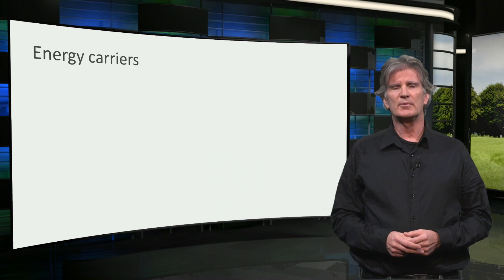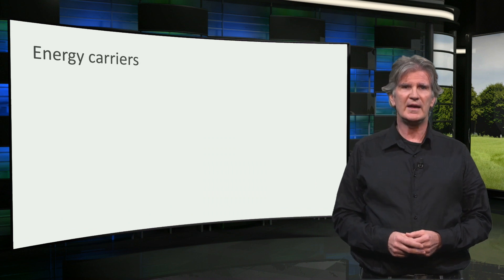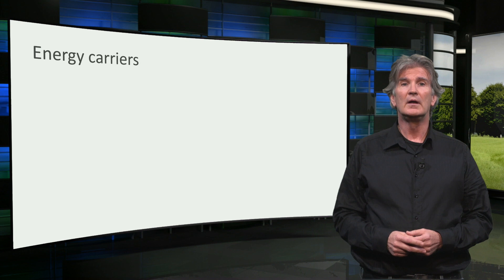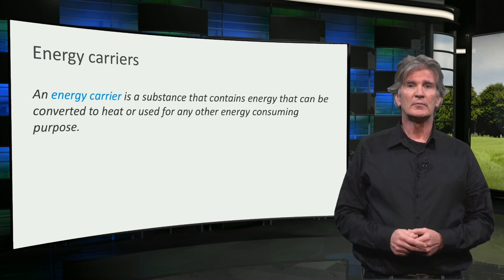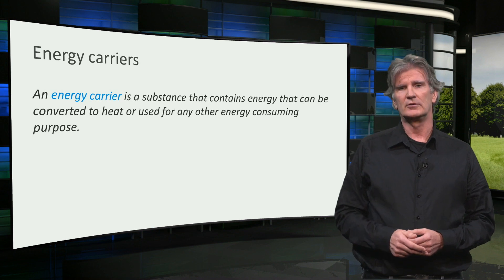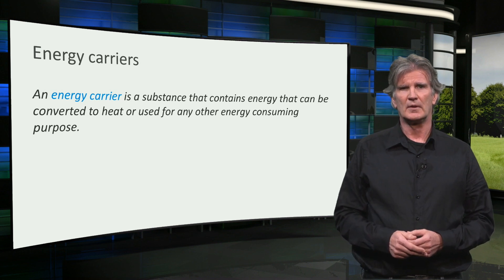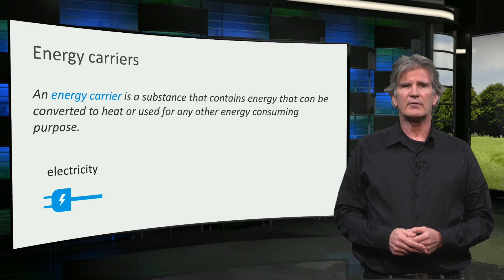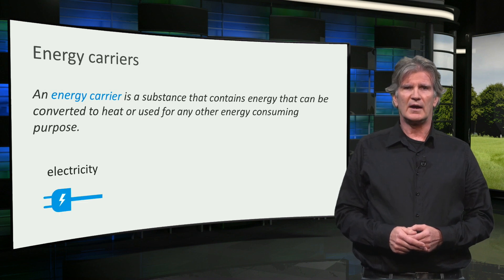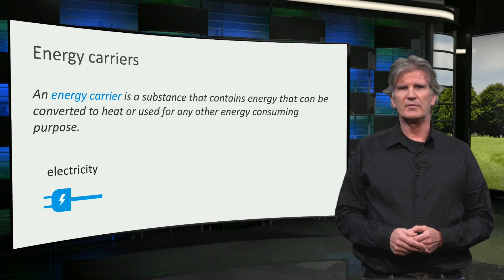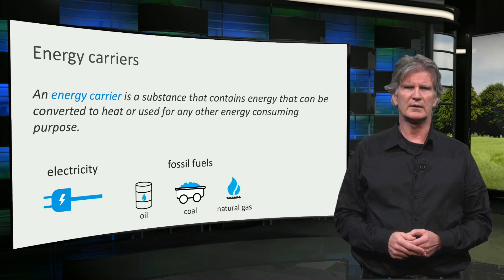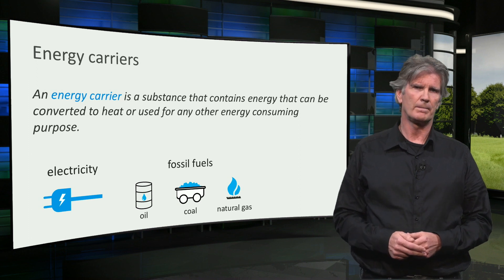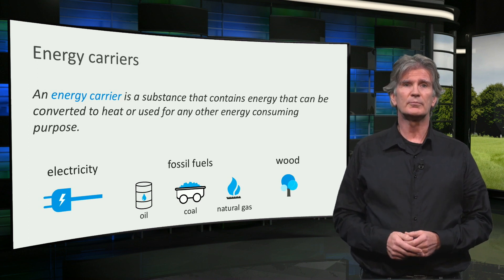The energy for all these purposes must be provided by what we call energy carriers. An energy carrier is a substance that contains energy that can be converted to heat or used for any other energy-consuming purpose. The most common energy carrier is electricity, the most versatile of all forms of energy available. Other examples are fossil fuels like natural gas, coal, and oil. And wood can also be an energy carrier when used for heating or cooking.